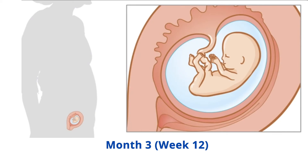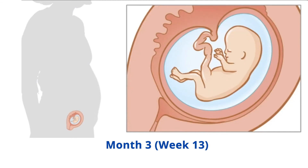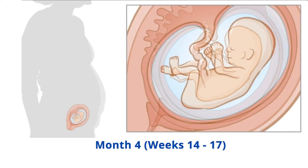Weeks 12-13: around week 12, the fetus starts to make urine and begins to transfer waste products to the mother through the placenta. By week 13, most of the major organ systems have developed to some extent — the central nervous system, heart, limbs, eyes, and ears are all in critical stages of development.